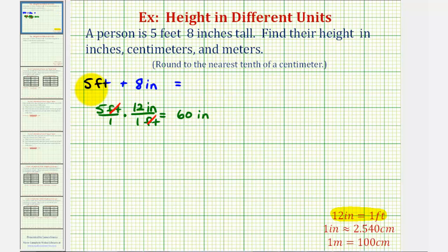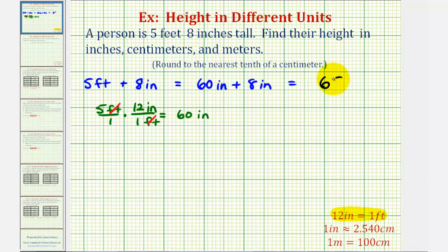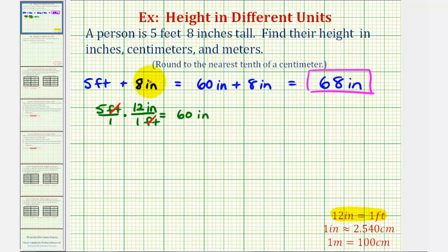Which means five feet eight inches is equal to sixty inches plus eight inches, which is equal to sixty-eight inches. So this is the first part of the problem — the height in inches is sixty-eight inches. And now for the next part, we also want to express the height in centimeters.